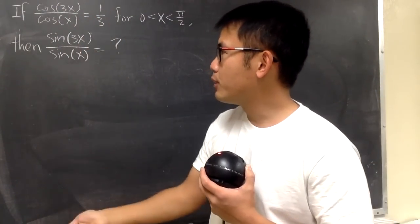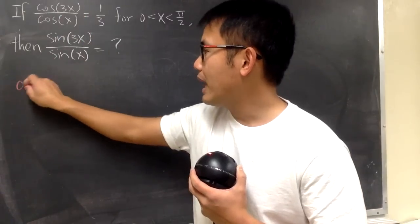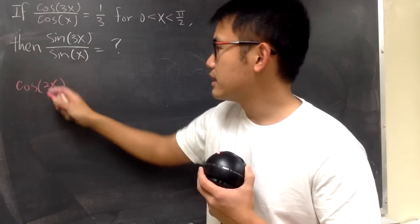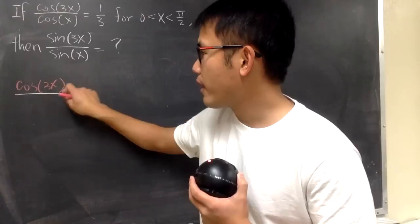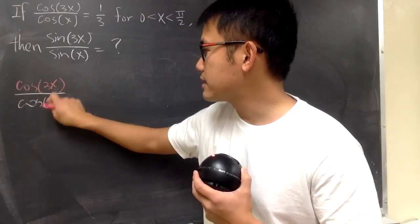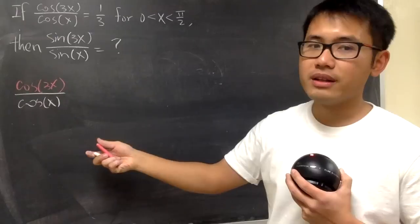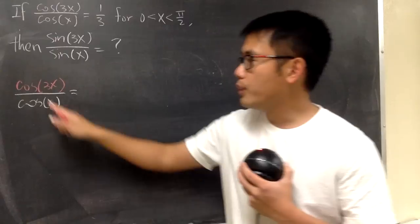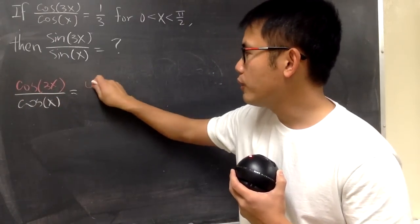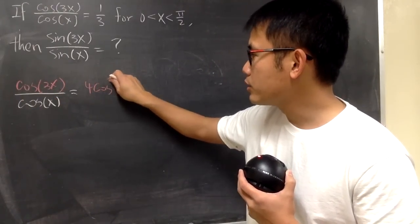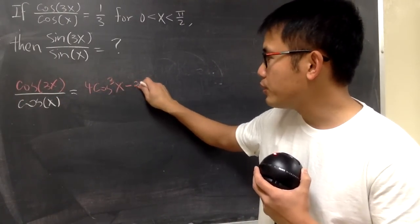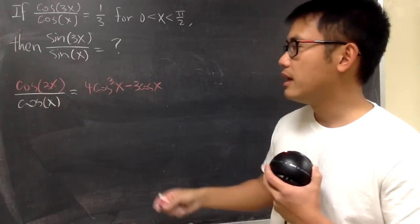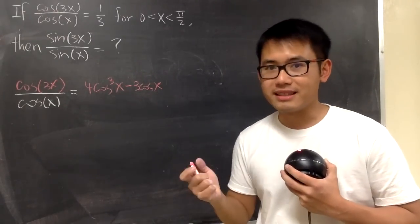From here, let me write this down again. When we have cos(3x) over cos(x), of course the angles are different. But because of the triple angle identity, we know this is equal to 4cos³x - 3cos(x). And then divide this by cos(x).